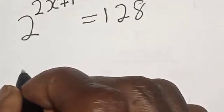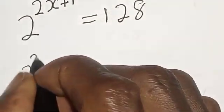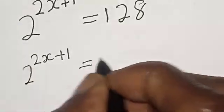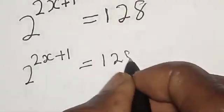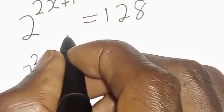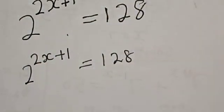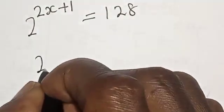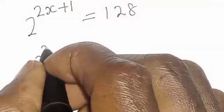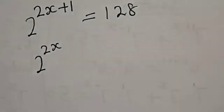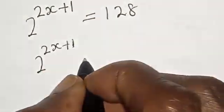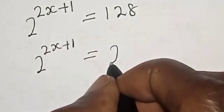We have 2 raised to power 2s plus 1 is equal to 128. Now this is 2 raised to power 2s plus 1 is equal to 128, which is 2 raised to power 7.